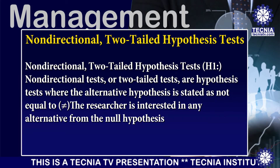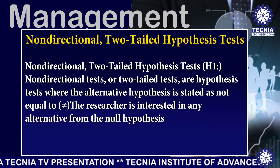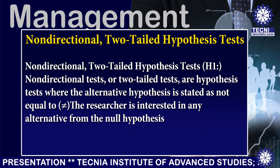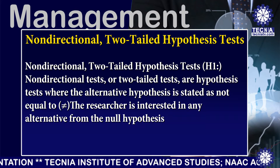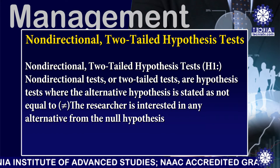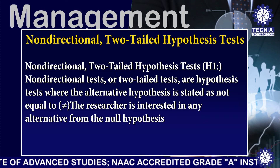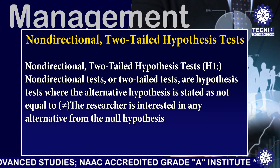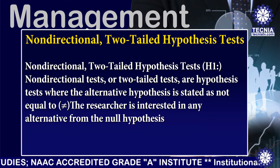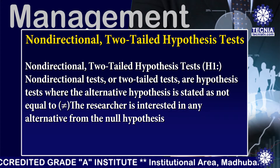I have to explain what is a non-directional two-tailed hypothesis test, which is described as H1. A non-directional test or two-tailed test is a hypothesis test where the alternative hypothesis is stated as 'not equal to.' The researcher is interested in any alternative from the null hypothesis.